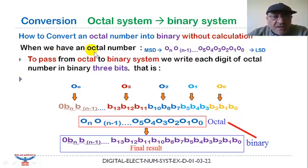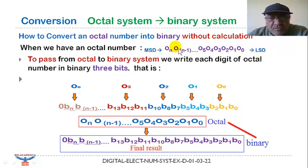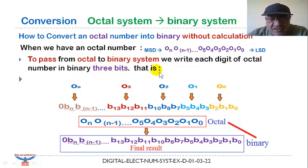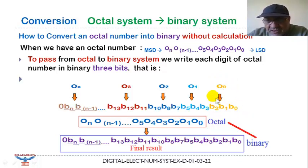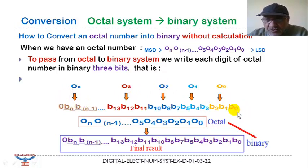When we have an octal number, this digit represents the least significant digit and this one the most significant digit. To pass from octal to binary system, we have to write each digit of the octal number in binary three bits. We take each digit of the octal number, transform it into binary three bits — the same for the second, third, and so on. We then make a juxtaposition of these transformations to obtain the final binary number.